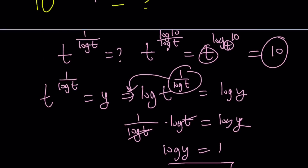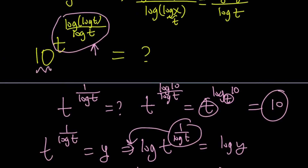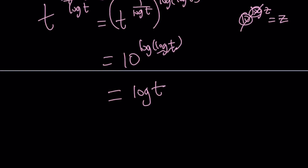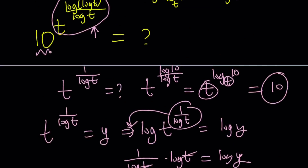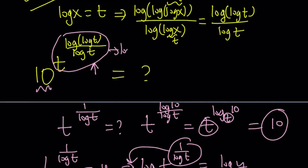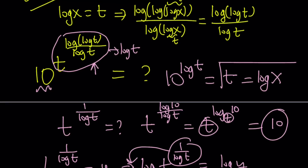So that exponent turned into log t. Now we have 10 to the power log t, which equals t by the same rule. But t is just equal to log x. So our expression, when simplified, is equal to log x.